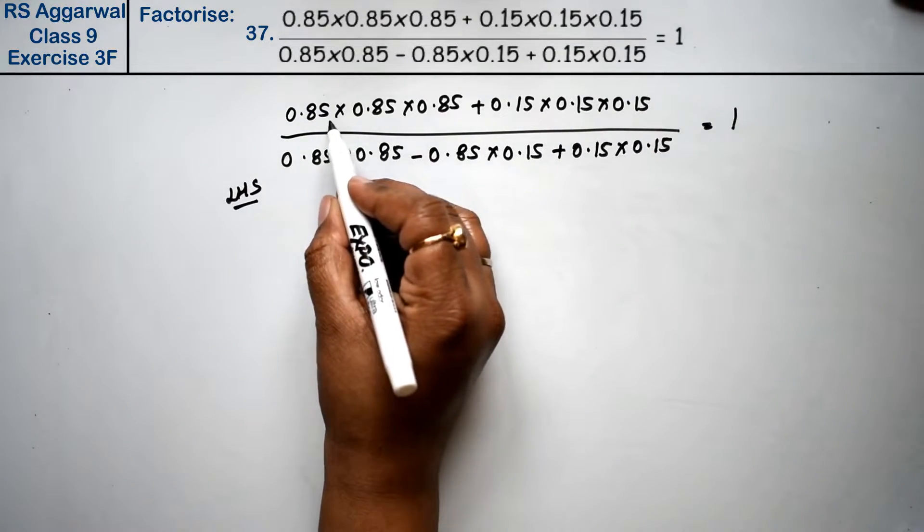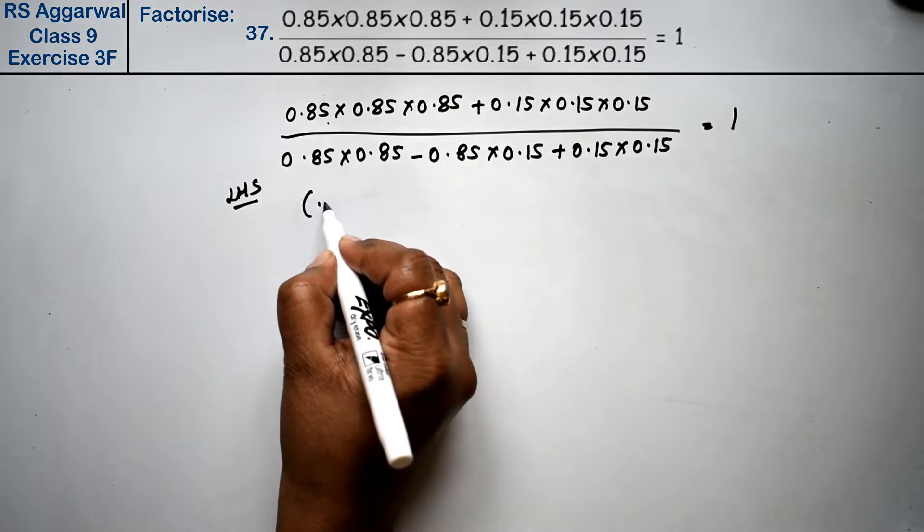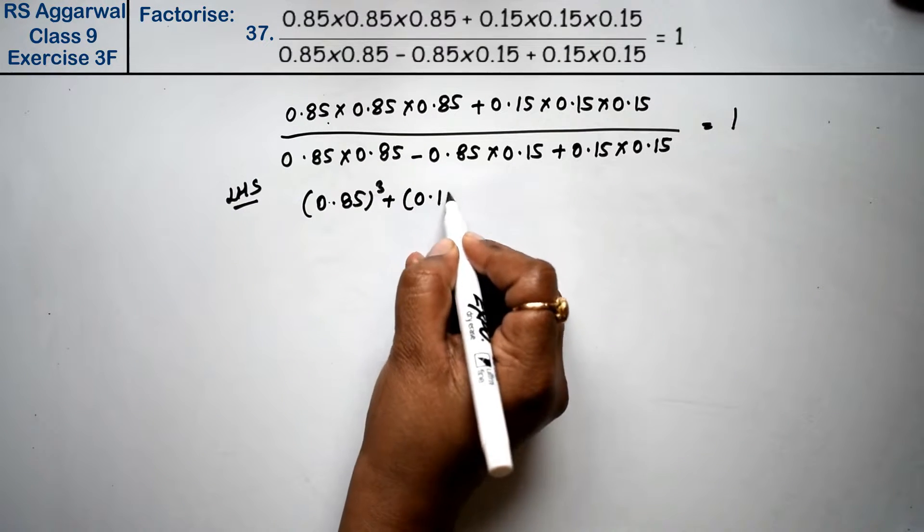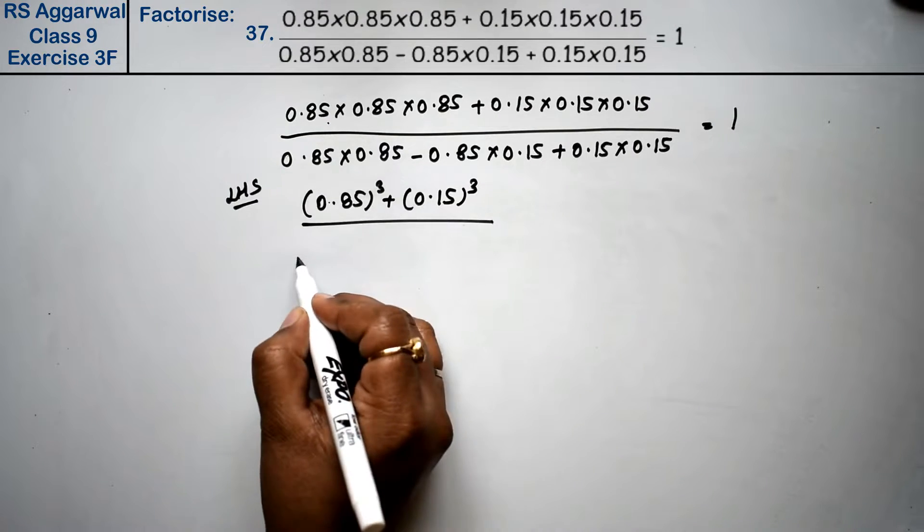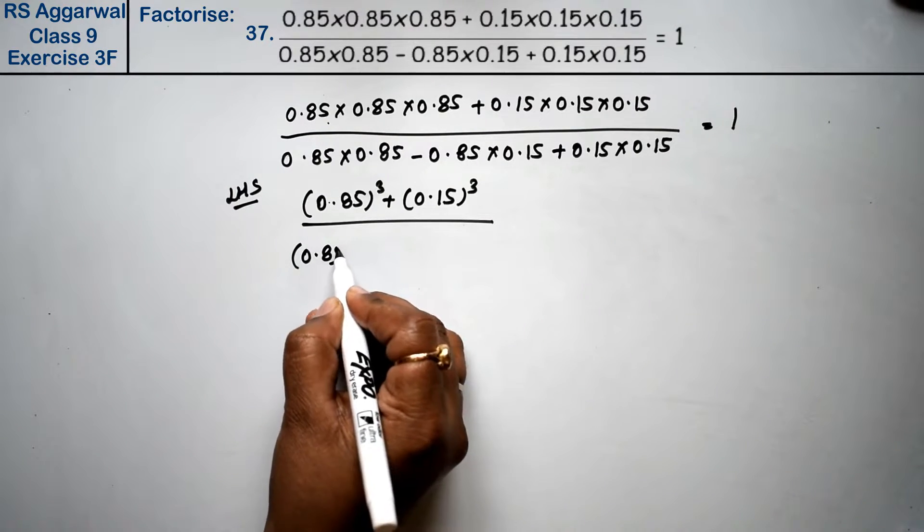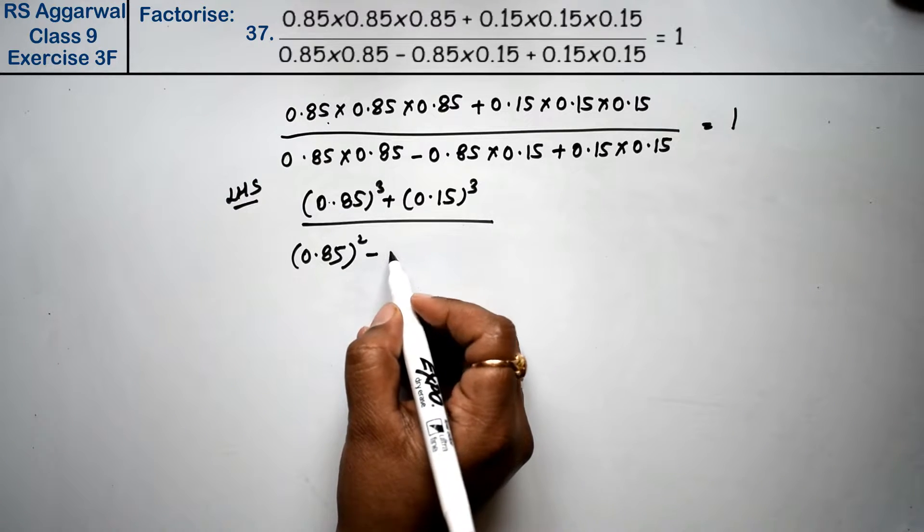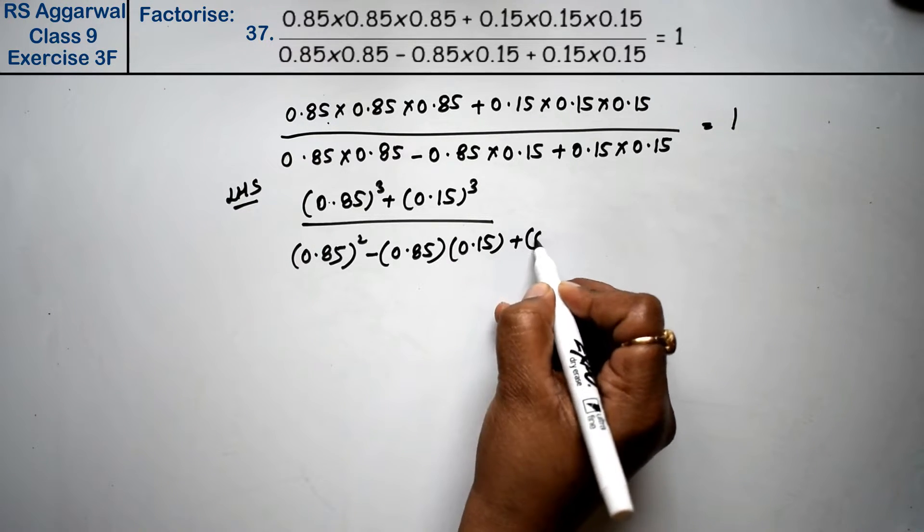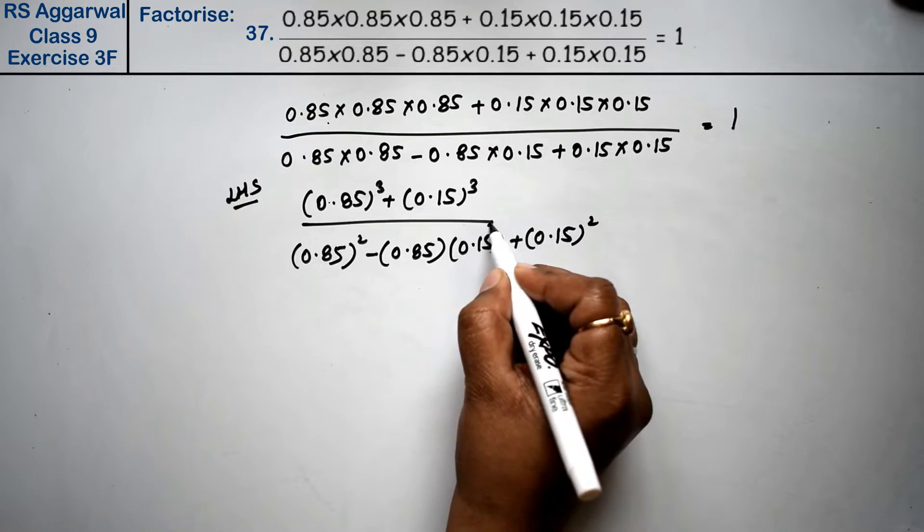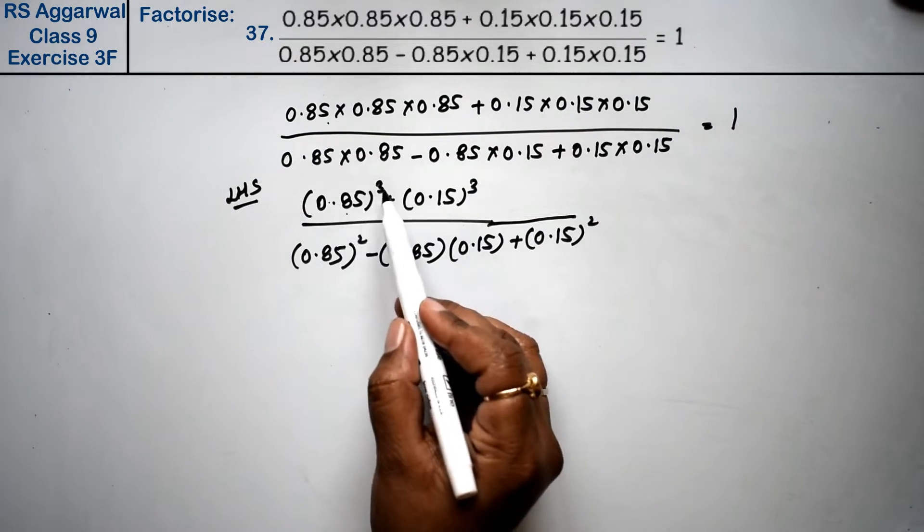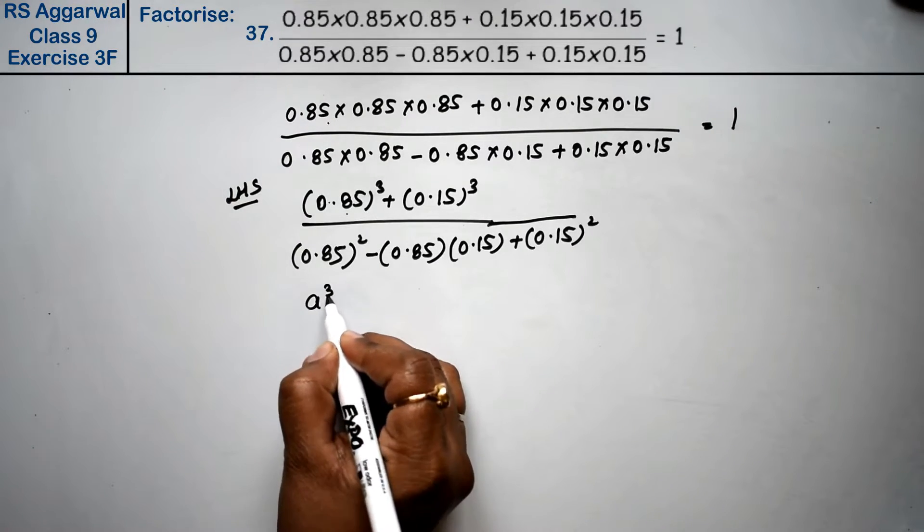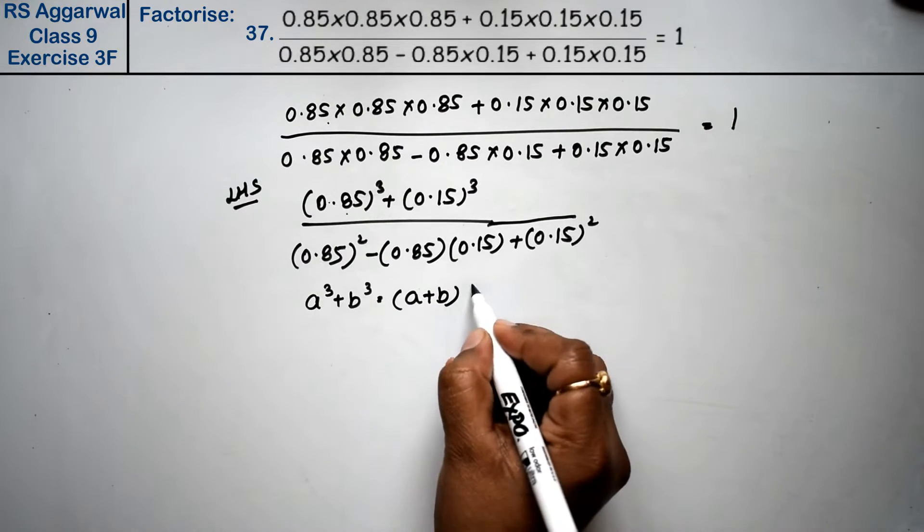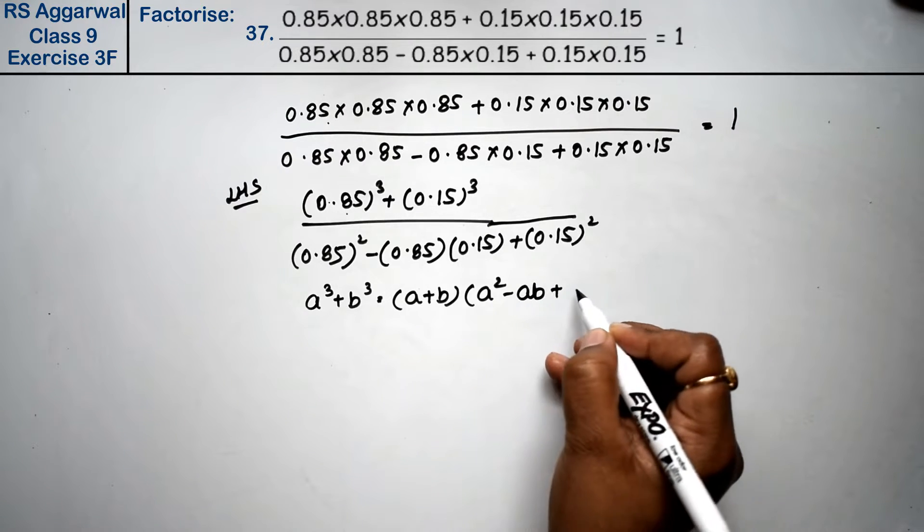Left hand side, we can write as 0.85³ + 0.15³ upon 0.85² - 0.85 × 0.15 + 0.15². The formula for a³ + b³ was (a + b)(a² - ab + b²), right friends?